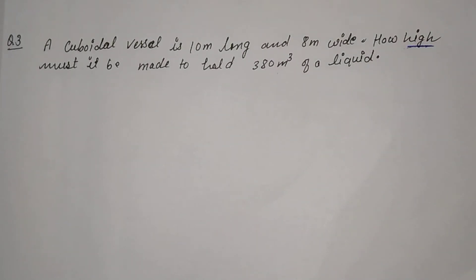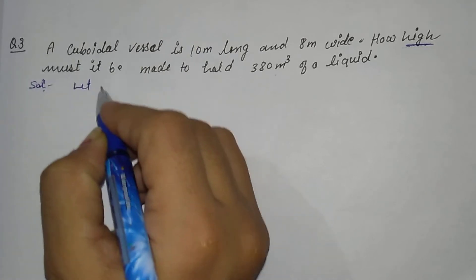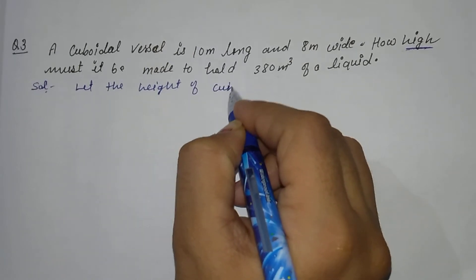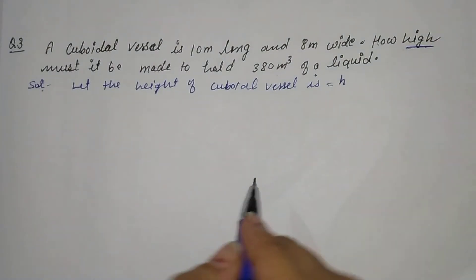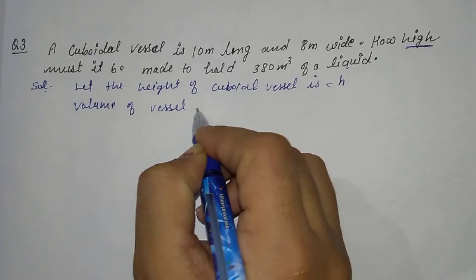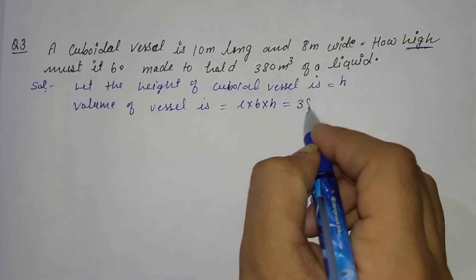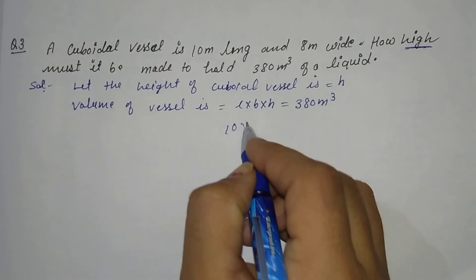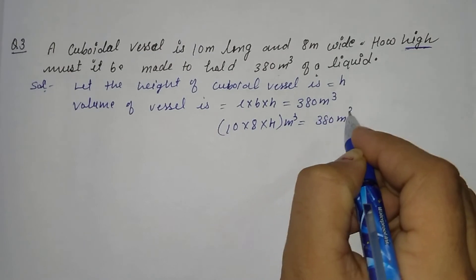So using what is given, we will find the height. Let the height of the cuboidal vessel be h. Volume of vessel = L into B into H. Volume given in the question is 380 meter cube, length is 10, breadth is 8, and height h is to be found. So: 10 into 8 into h = 380 meter cube, which gives 80h = 380.